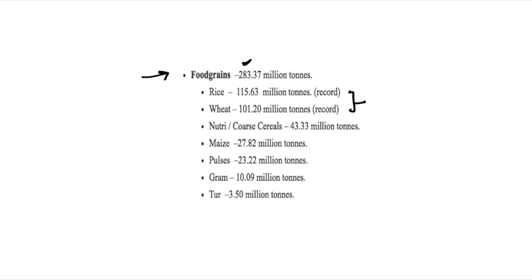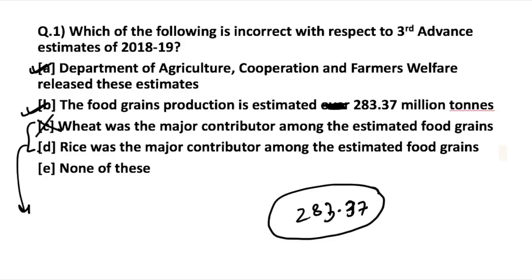As you can see, rice is the major contributor among the food grains. A possible question would be: which food grain is the maximum contributor in food grain production for 2018-19 as per the third advanced estimate? Rice is the major contributor with a production of 115.63 million tons. Since it is a record production, it's important to remember these numbers. Wheat was not the major contributor — that is the incorrect statement in the question.